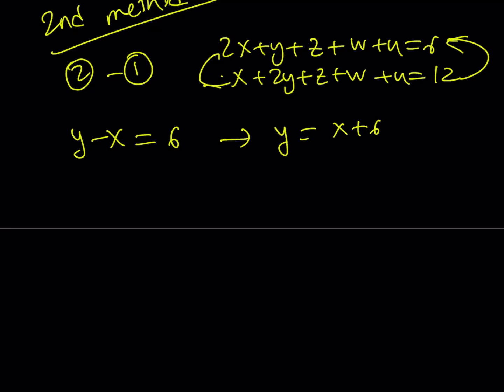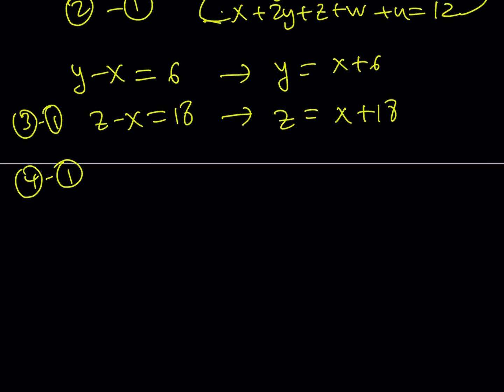From here, we can write Y as X plus 6. And then, we can do the three minus one, same way. That's going to give us Z minus X equals 18. And from here, I can write Z equals X plus 18. I'm not repeating all the steps because you already know how this works. And then, if you subtract four minus one, then you're going to be getting, guess what? We're going to be getting W minus X. And that is going to equal 42.